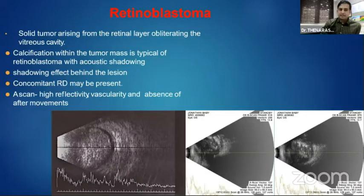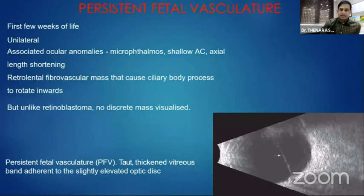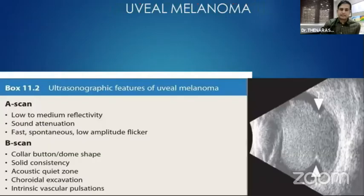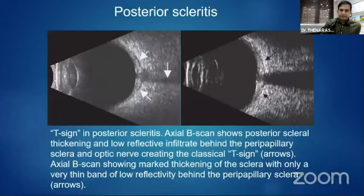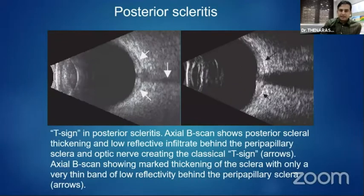In retinoblastoma, there is a mass lesion — exophytic or endophytic — with multiple calcifications and post-acoustic shadowing. Concomitant retinal detachment may or may not be present. Another cause of leukocoria in children is persistent fetal vasculature, which differs by microphthalmos with very short axial length. The classic picture of uveal melanoma shows a choroidal button or mushroom-shaped appearance with choroidal excavation.